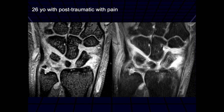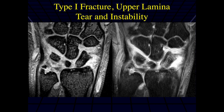We can see a lot of fluid going into the distal radial ulnar joint space — really a separation there. This was a fracture. This one is unstable. Even though it's a distal fracture of the ulnar styloid, it's unstable because the upper lamina is also torn. If the upper lamina were intact, this would be a more stable fracture.